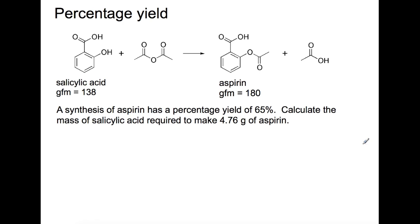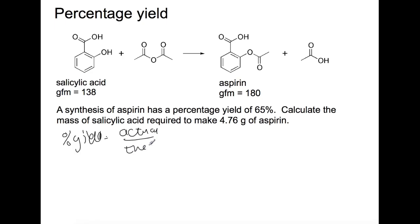The type of calculation you came across last year is the percentage yield calculation. We're going to look at this from a slightly different point of view, where we're given the percentage yield and a mass and are trying to find the mass that was used. Here is the synthesis for aspirin, where we take salicylic acid and ethanoic anhydride to produce aspirin and ethanoic acid. This synthesis has a percentage yield of 65%, and we need to know how much salicylic acid is required to make 4.76 grams of aspirin. The formula is: actual yield divided by theoretical yield, multiplied by 100.